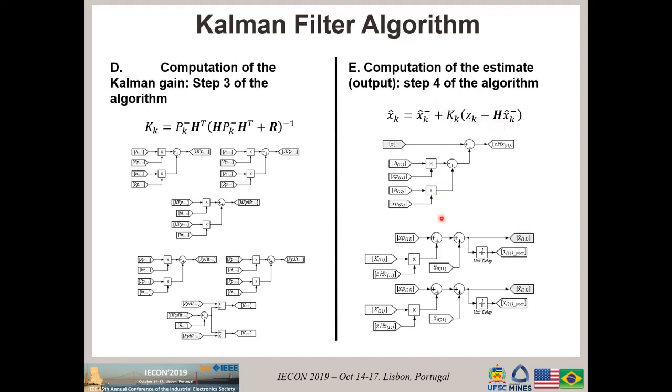Here we have the output. And here is where a unit delay appears to consider the prior case. This is used for the next loop of the algorithm because they need to know the previous output in order to compute the new Kalman gain. These are the blocks to implement steps one, two, three, and four of the algorithm.